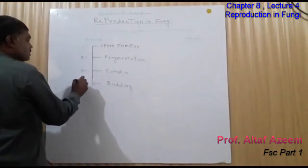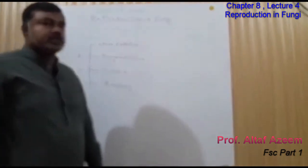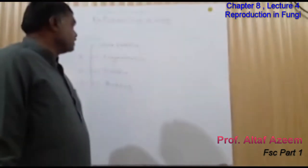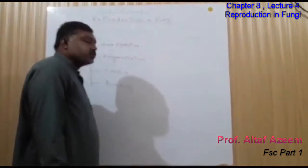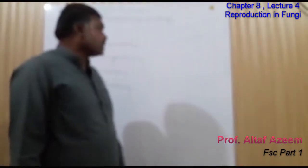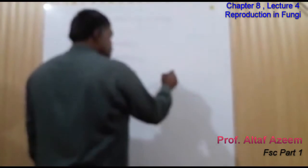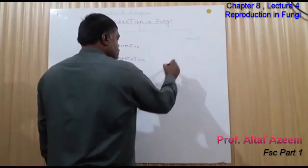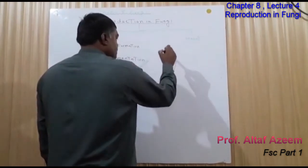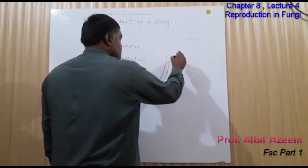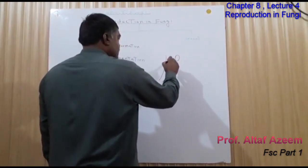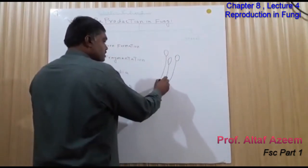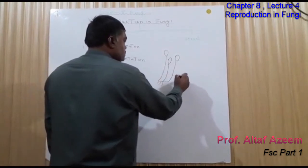These are the four methods of asexual reproduction in fungi. Spores are thick-walled rounded structures that are produced in reproductive structures known as sporangia. Spores are produced at the tips of some branches that are known as sporangiophores.